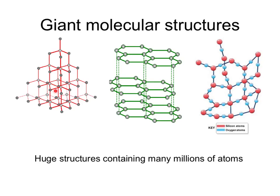Graphite also has a giant structure because, although these hexagonal sections are shown quite small, each of these would have hexagons going out in all directions, continuing for millions or billions of atoms. Another giant molecular structure is silicon oxide, found in sand, which also has a giant molecular structure with alternating silicon and oxygen atoms continuing for millions and billions of atoms.